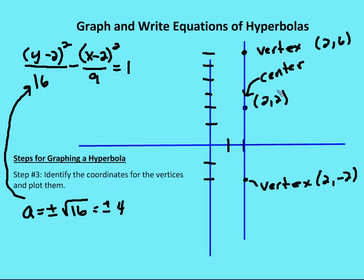My third step is to identify the coordinates for the vertices and plot them. The vertices are based off of the a value, which is underneath the positive squared value. So the a value corresponds to 16 — since 16 is a squared, a is going to be plus or minus four. Along the transverse axis, I move four units up to get a vertex at (2, 6), and four units down to get a vertex at (2, negative 2).